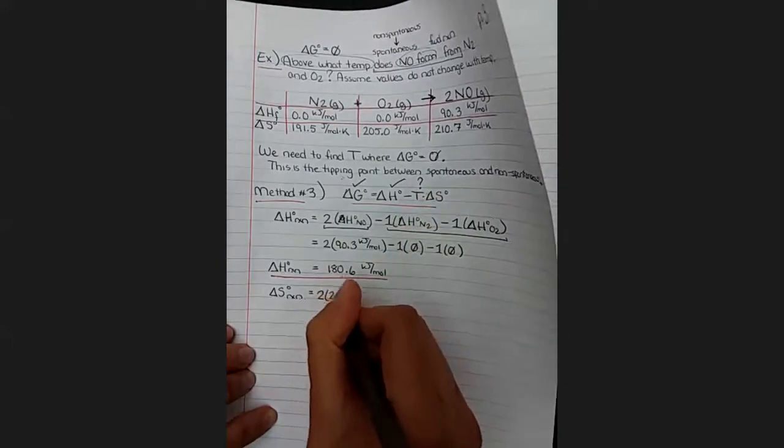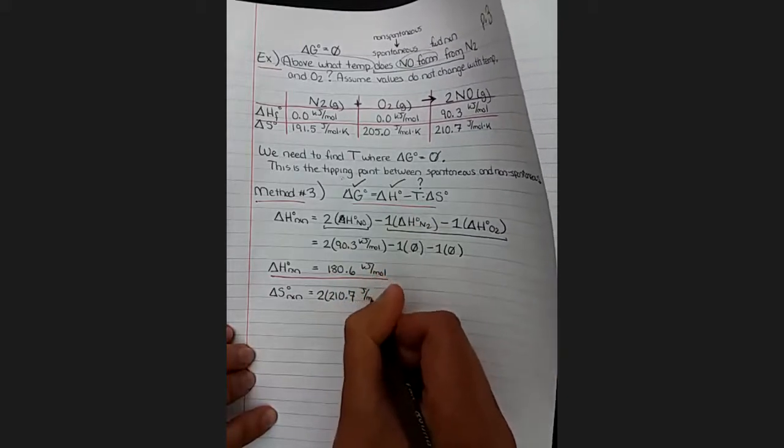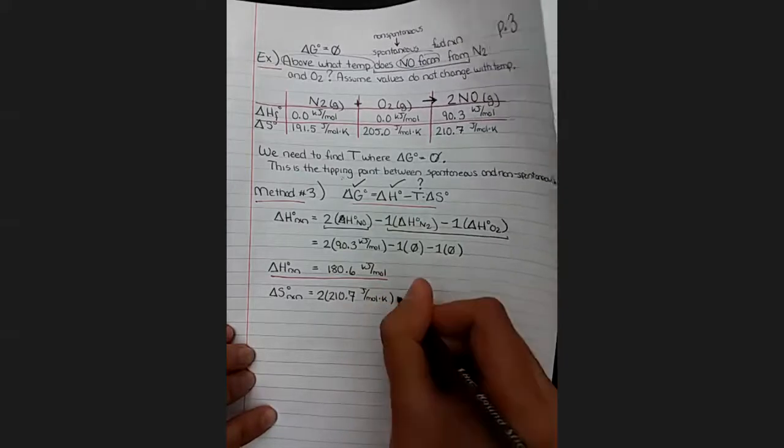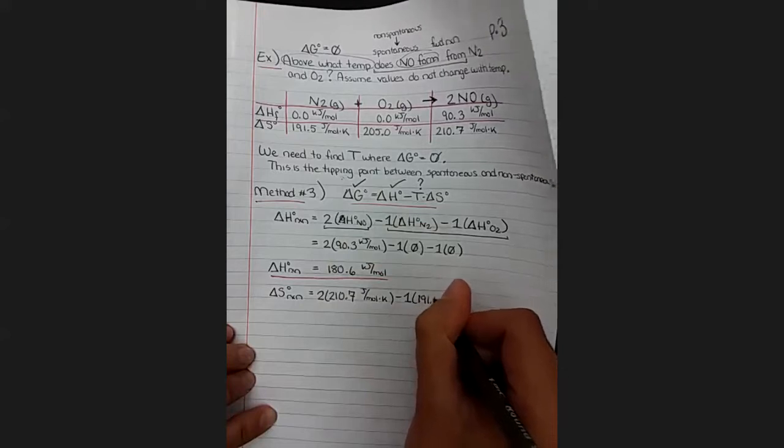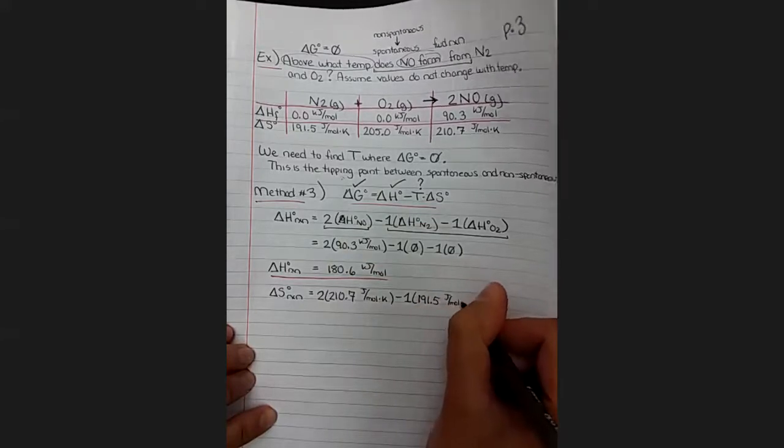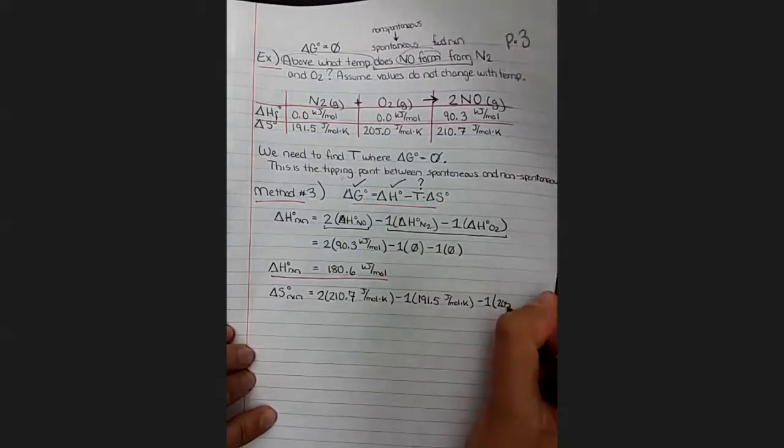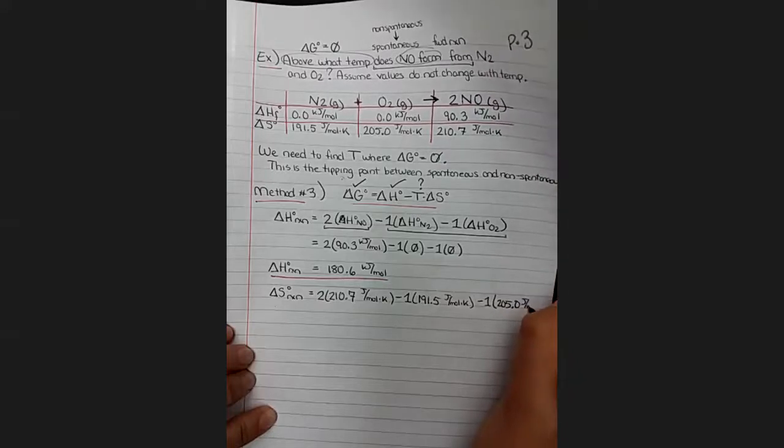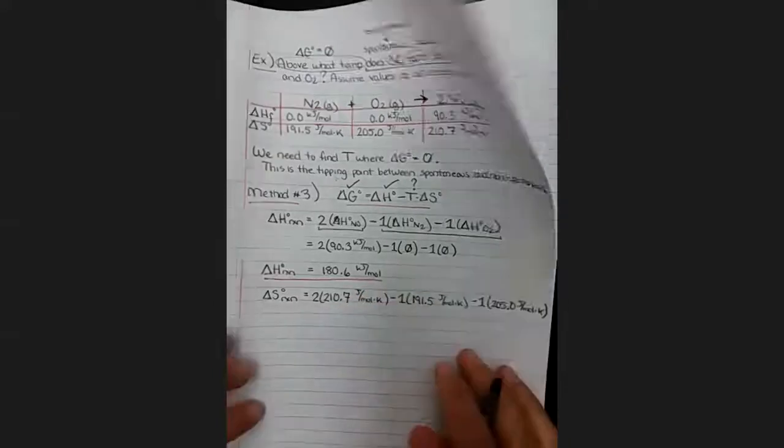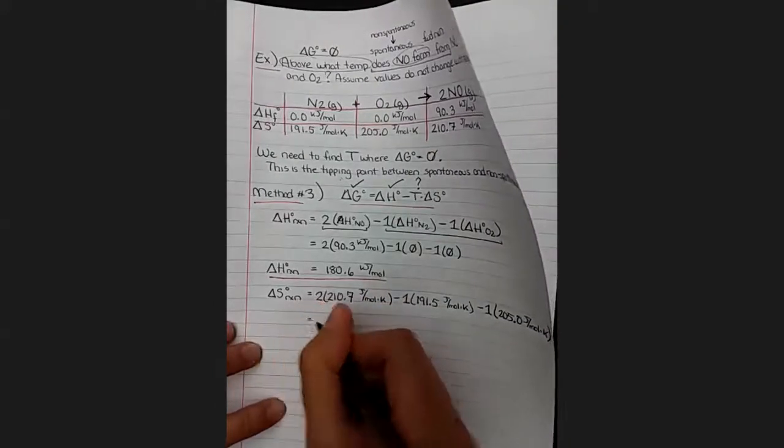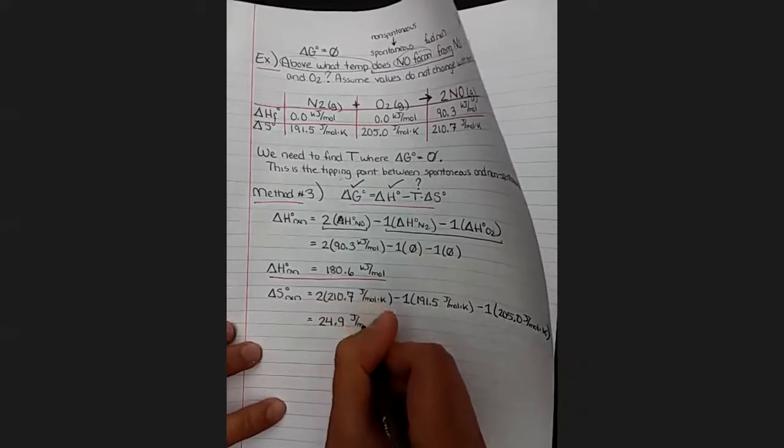So we're going to do two times 210.7 and watch out for those units: joules per mole kelvin in this case. Minus one times 191.5. Minus one times 205.0. Math happens here. You should end up with 24.9 joules per mole kelvin.